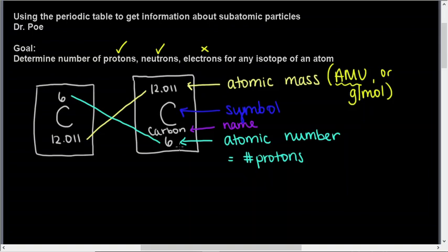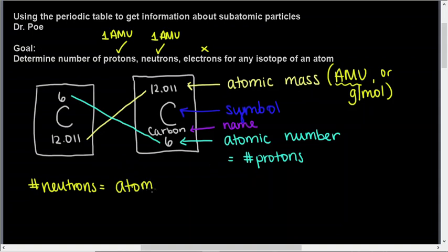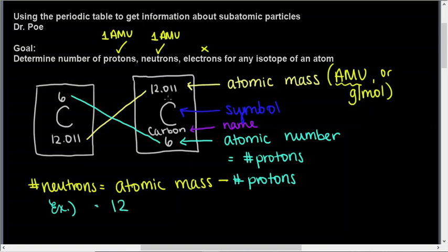So if we've got 6 protons, the mass has to be at least 6, because each proton has a mass of 1 amu. Each neutron also has a mass of 1 amu. To determine the number of neutrons, all we have to do is take the atomic mass — which is the total of protons and neutrons — and subtract out the number of protons. So: atomic mass minus number of protons. In this example, our atomic mass is about 12, and our number of protons is 6, so carbon has 6 neutrons.